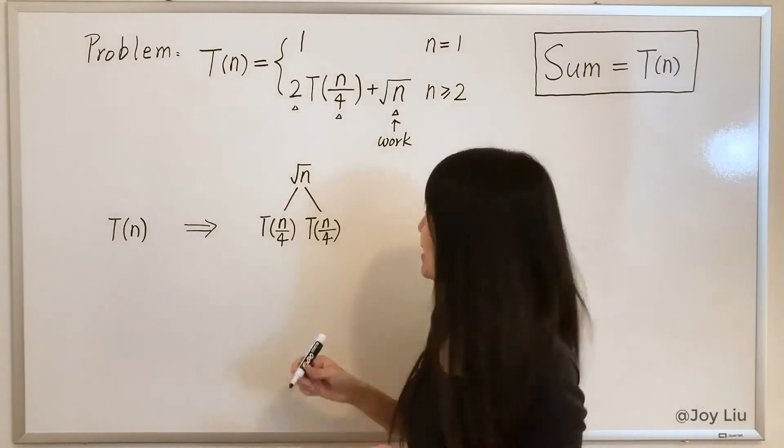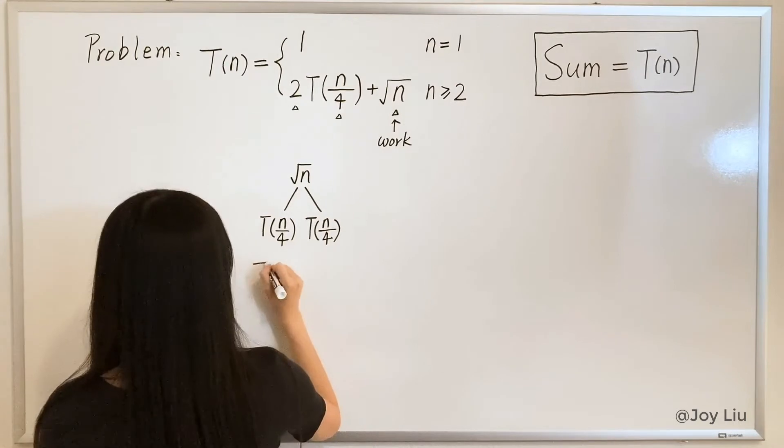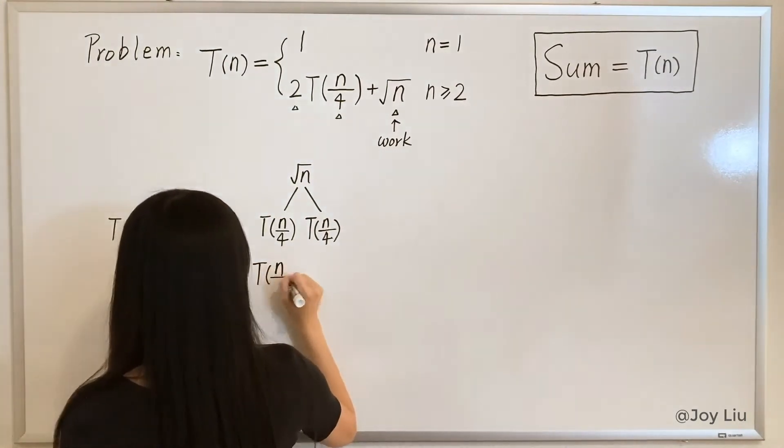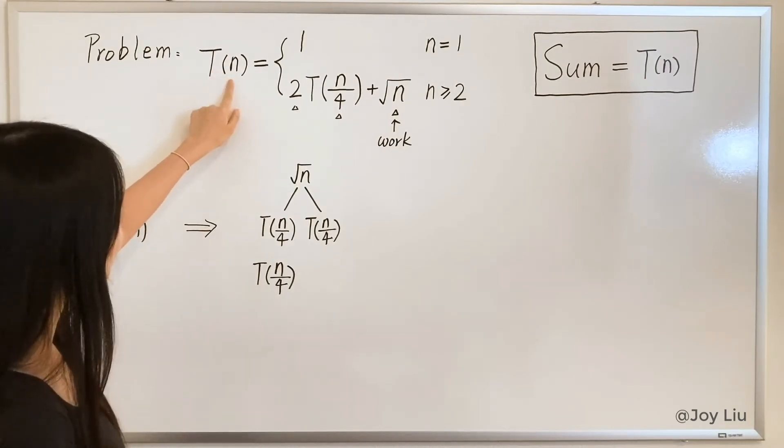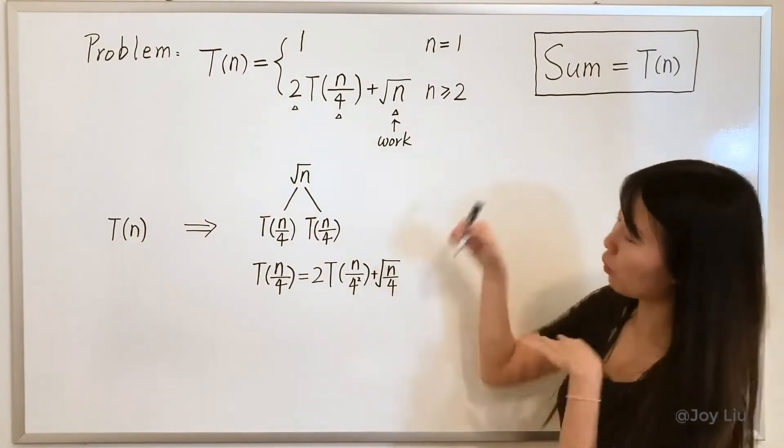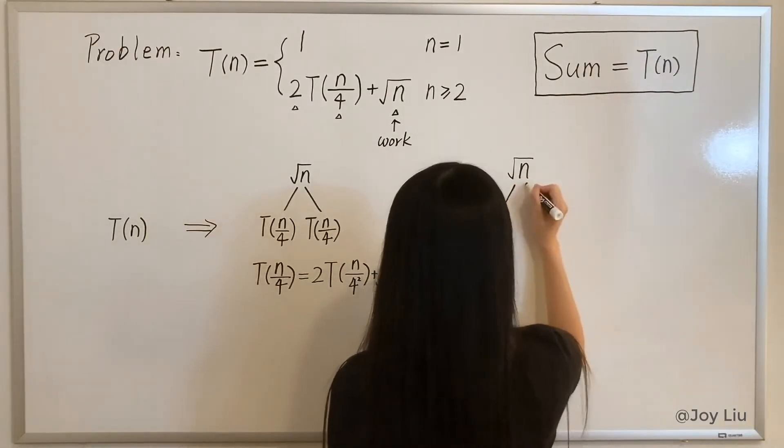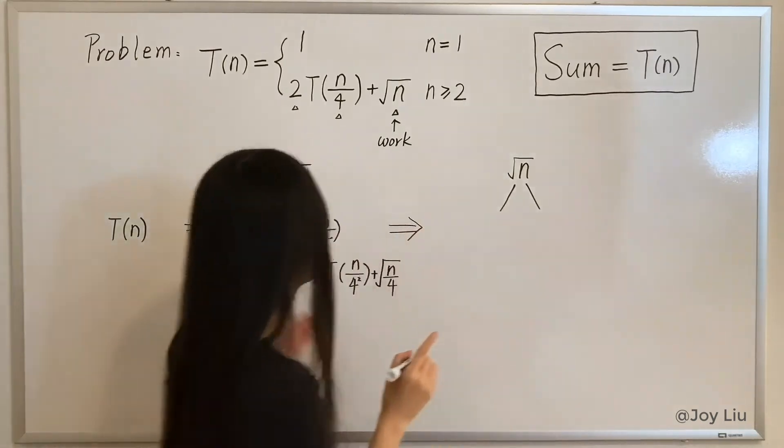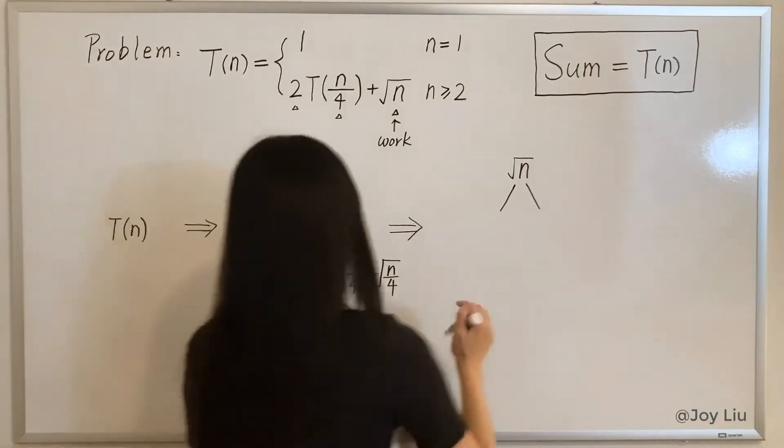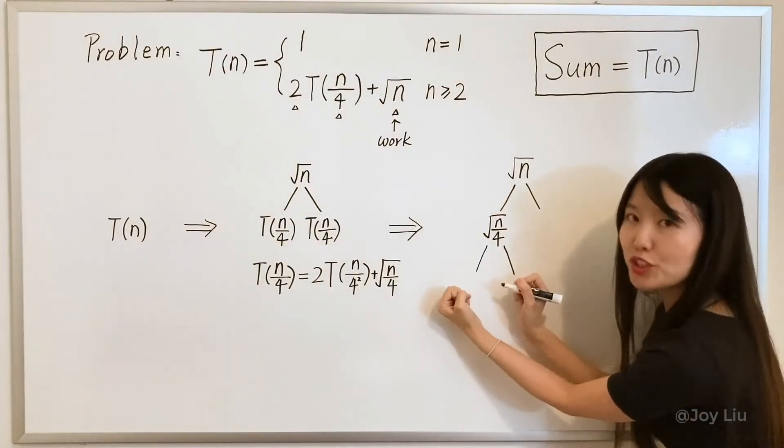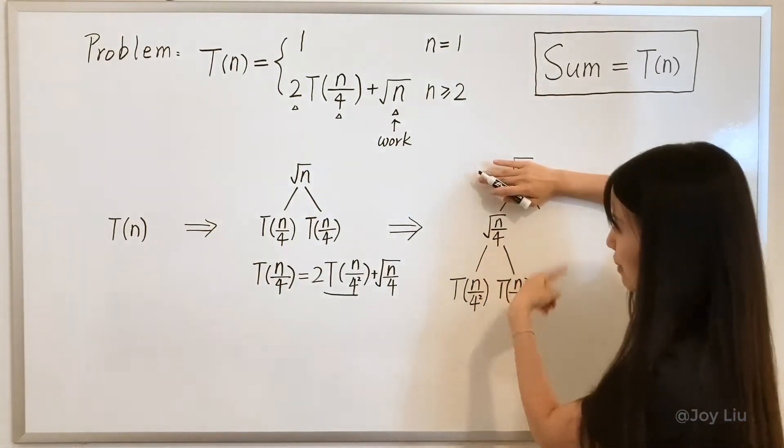What if we have three levels? Yes, we just need to expand this term like this. So what is T(n/4)? It's simple, you just replace n with n/4. Now we are going to draw a tree with three levels based on our rule. Square root of n, we don't change it. The only thing we need to change is T(n/4). Since T(n/4) equals to this, we put the work here. What are the two children of this? Yes, it's just this term, right?